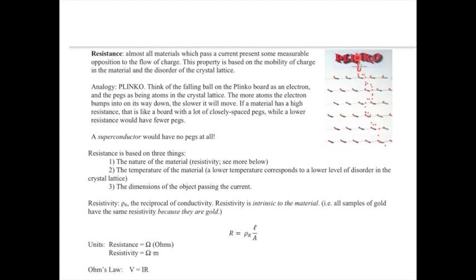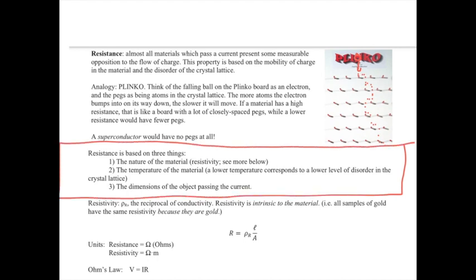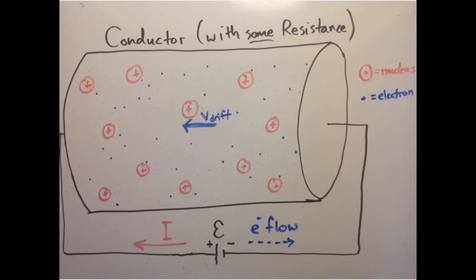There's three things that resistance is based on, and these are summarized right here in this list. So the first thing to talk about is the nature of the material. The nature of the material is going to be related to this thing called resistivity, which will affect a couple of the factors that we've discussed before, one of which is drift velocity.